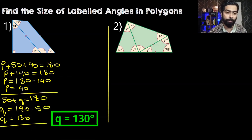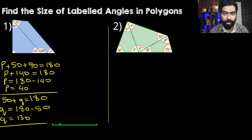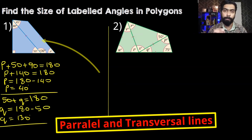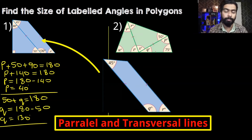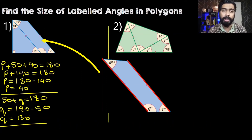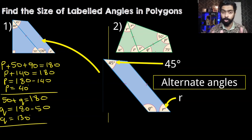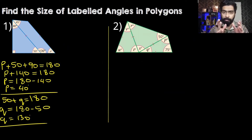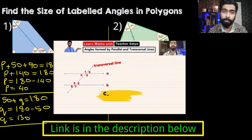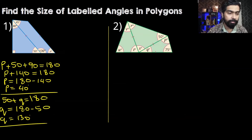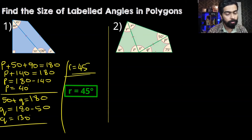We have found angle Q. Now to find angle R, we will be using the understanding of parallel lines and transversal. These two lines are parallel and the other two lines act as the transversal. This 45 degrees and angle R are alternate angles. If you don't know about parallel lines and transversal, I'll leave a link in the description. So angle R is equal to 45 degrees, because it is the alternate angle of this 45 degrees.